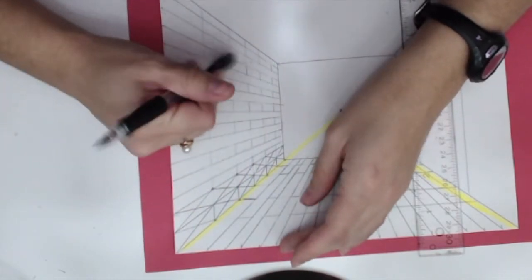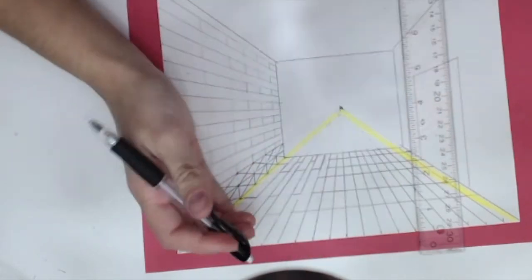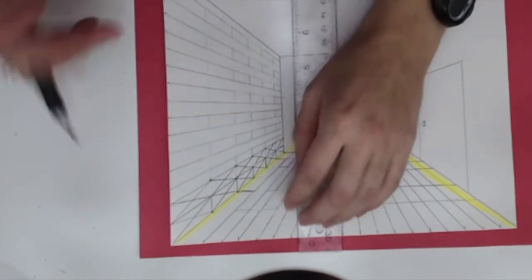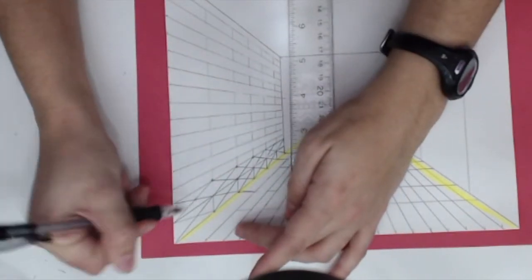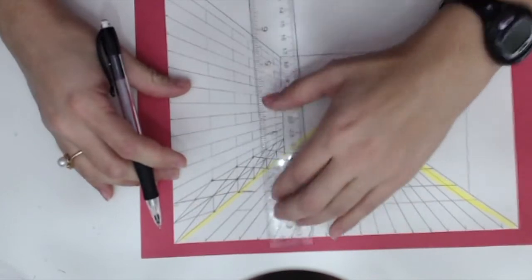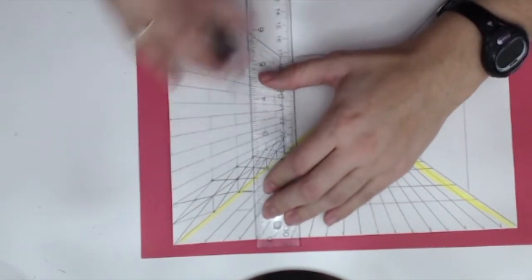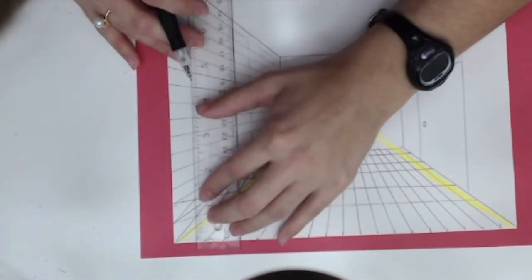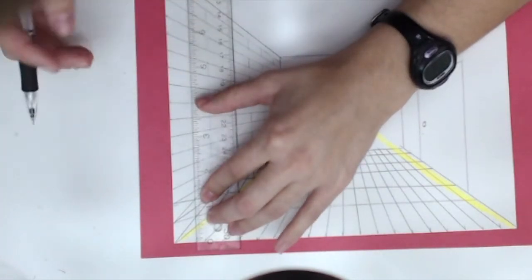So you're going to have something that looks a little bit like this when you're done. Okay, so now we've got to figure out where these other vertical lines go in between these. Notice these X's that we have on our subdivision grid. Line those intersections up of those X's.